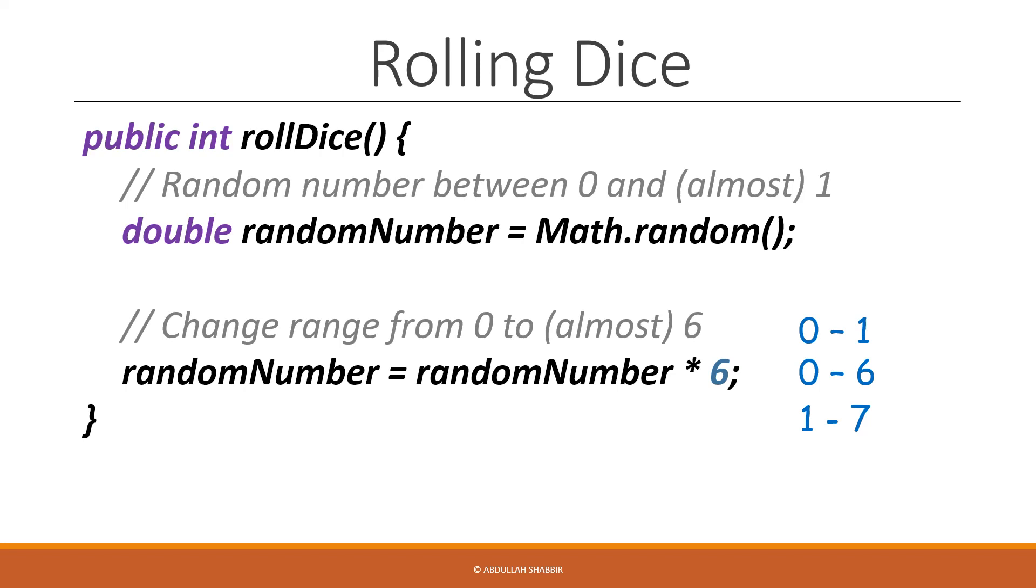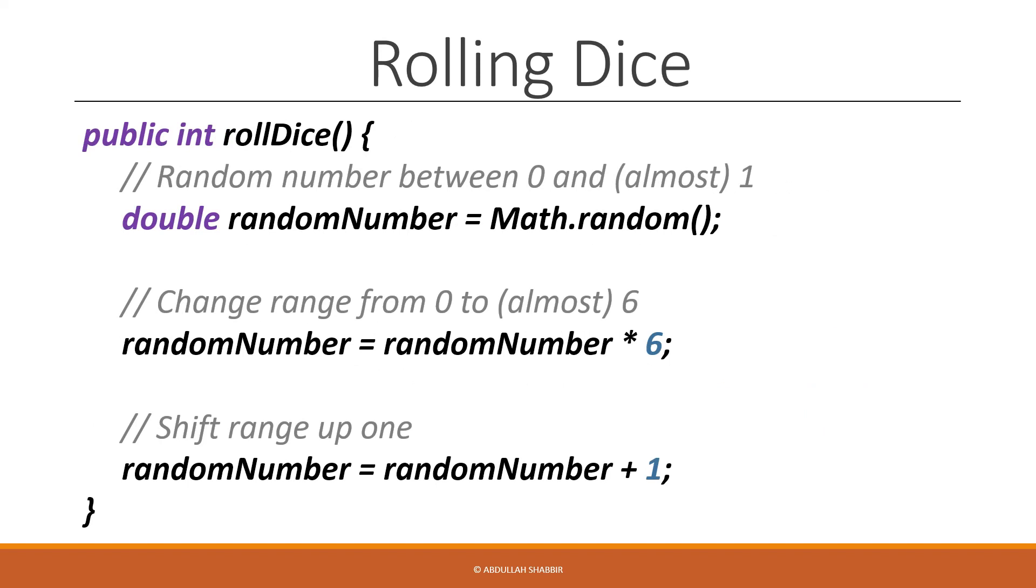A maximum value close to 7, something like 6.999, will be casted to a max integer value of 6. So we need to shift this whole range up by 1. We can do that by adding 1 to our random number. And our adding 1 shifts this whole range into the correct place, 1 through almost 7.